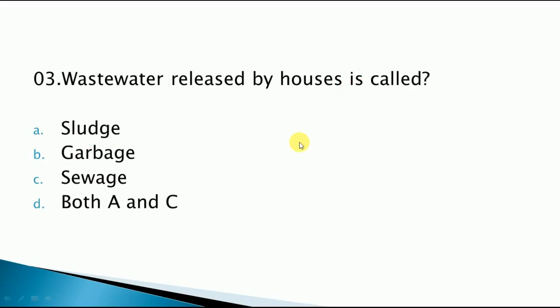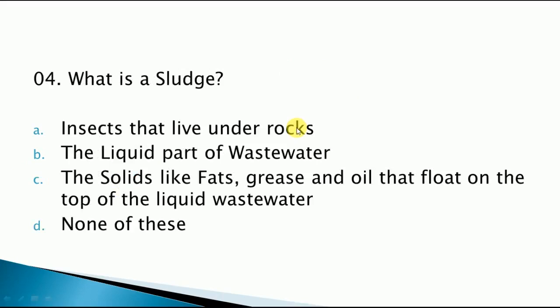Wastewater released by houses is called — the correct answer is option number C. What is sludge? The correct answer is the solid-like fats, grease and oil that float on top of the liquid water. This wastewater is called sludge.